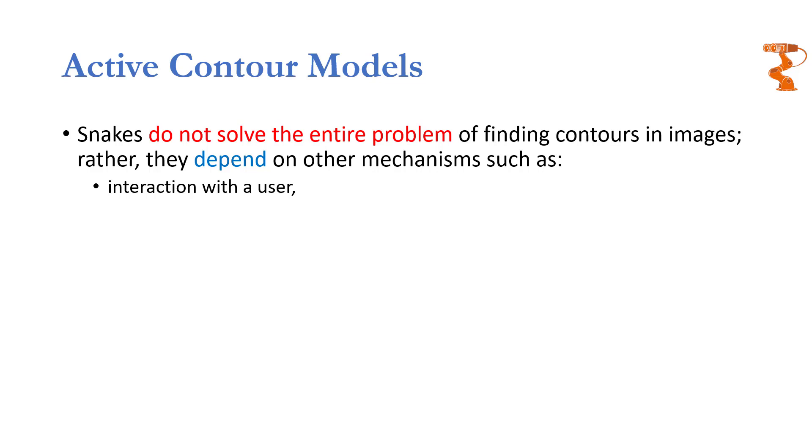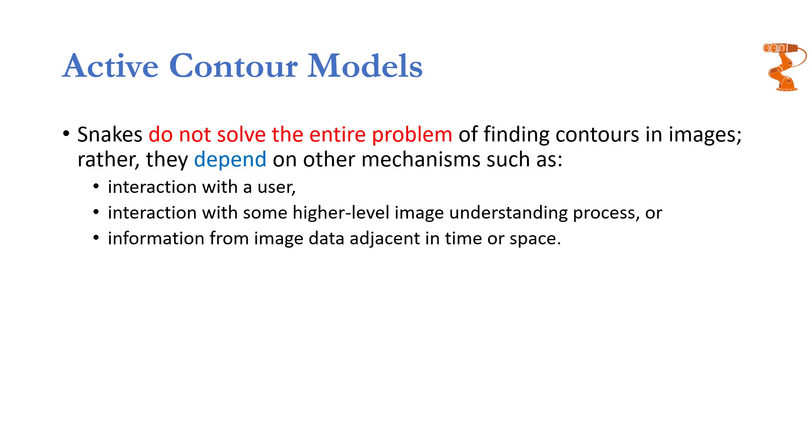The first mechanism they are going to get help from is the user itself. The interaction with a user is quite an important factor. But there are ways to automate these things which you will understand in a bit. The second thing is they require some higher level image understanding process. They need to understand what they want to do, what is the shape of the image, what is the scenario, how the gray levels are changing, where possibly there can be edges, where possibly there can be local minimas. And additionally they can use some information from image data adjacent in time or space.